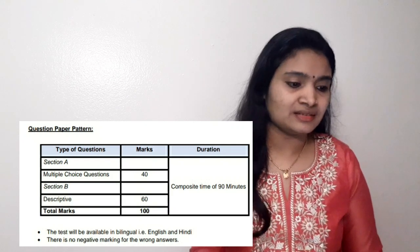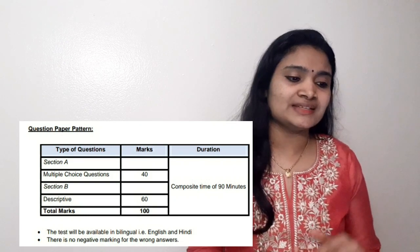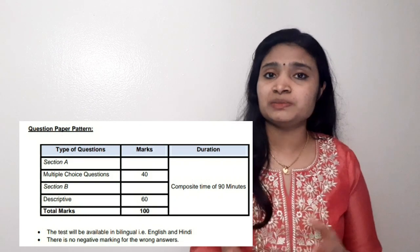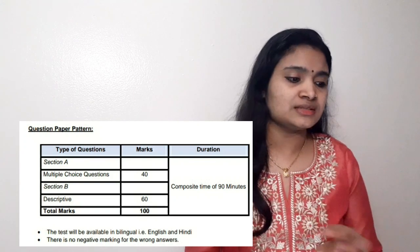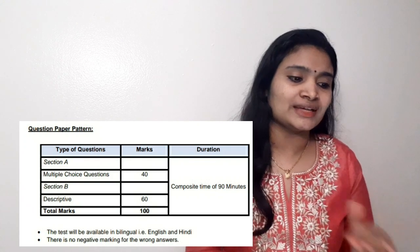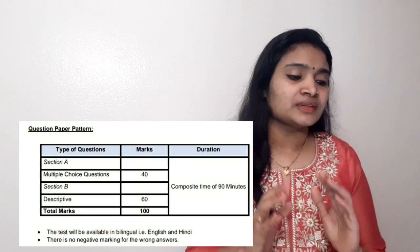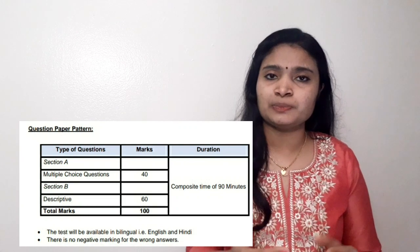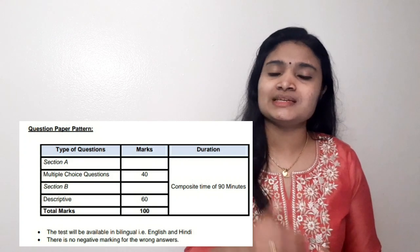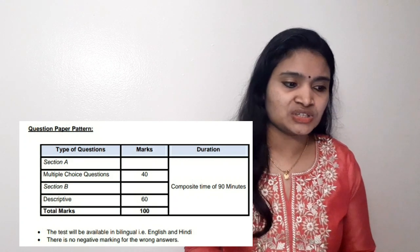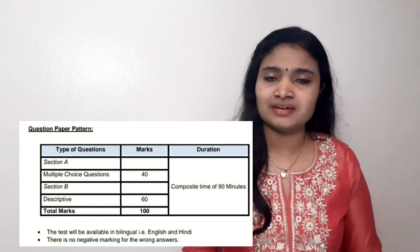The exam consists of two sections. Section A is a Multiple Choice Question session with 40 questions and 40 marks allotted. Section B is a descriptive examination with 60 marks allotted. So it is a 100-mark examination in total.